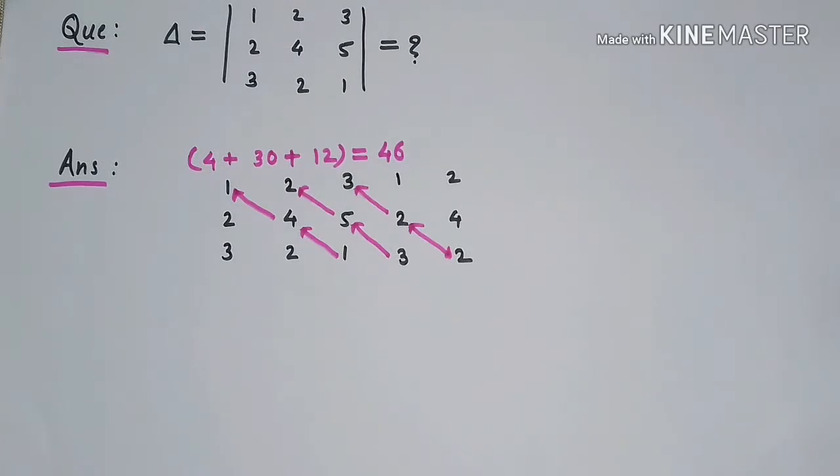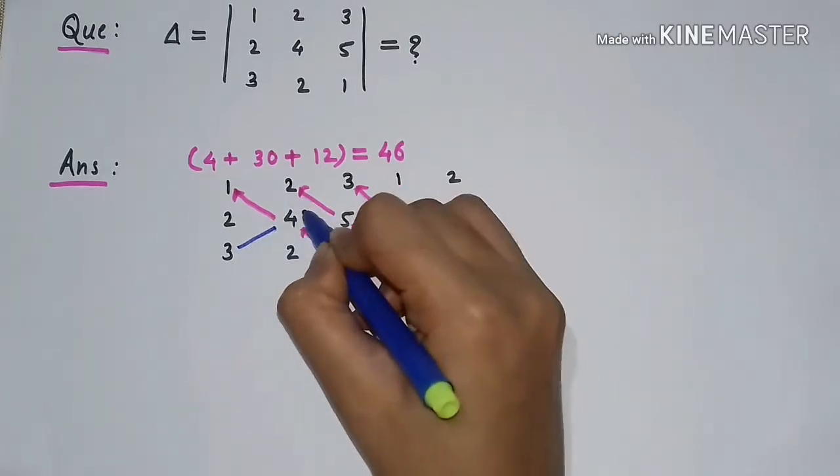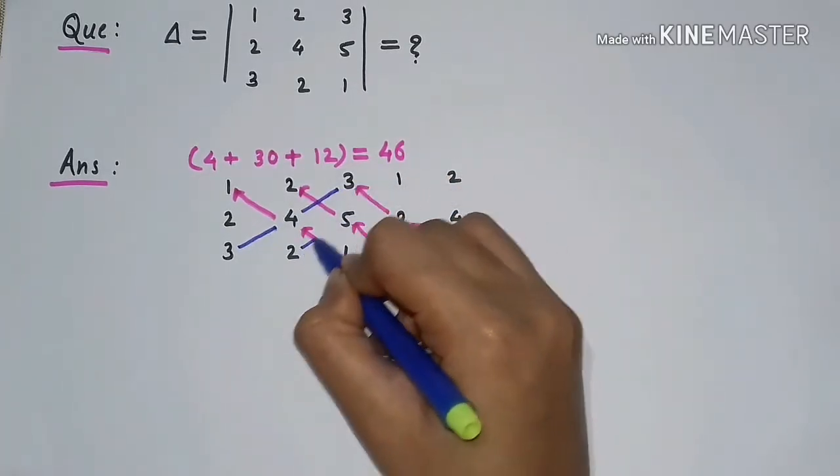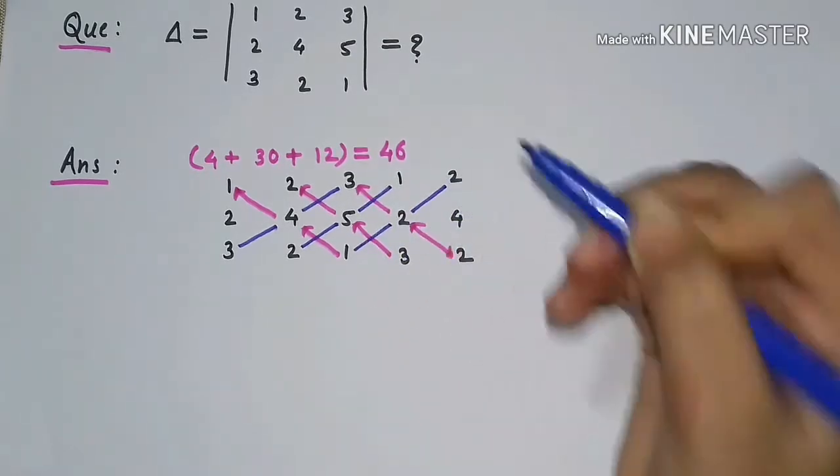Now we have to identify the left hand side diagonals. This is the first left hand side diagonal, this is the second left hand side diagonal, and this is the third left hand side diagonal.